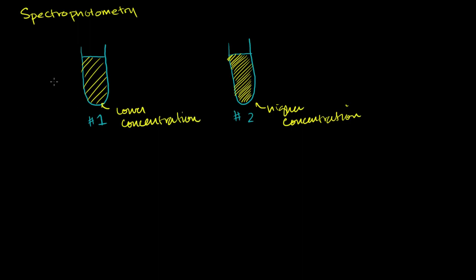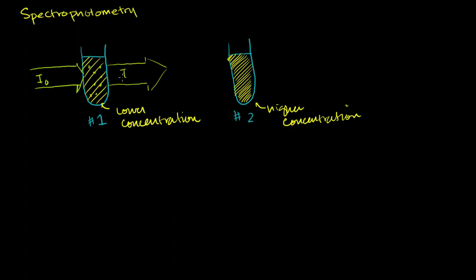Now let's think about what will happen if we shine some light through each of these beakers. Let's assume that we are shining at a wavelength of light that is specifically sensitive to the solute dissolved in here. So let's say I have some light here of some intensity — the incident intensity, I0. What's going to happen as the light exits the other side of this beaker? Well, some of it is going to be absorbed. Some of this light at certain frequencies is going to be absorbed by the molecules inside the beaker, so you're actually going to have less light coming out. I'll call this I1.